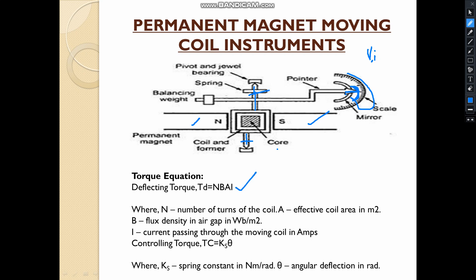The most important equation is the torque equation. Torque is force times distance, where force is NbIl and distance is d. Since l times d equals area A, the deflecting torque Td equals N·B·I·A, where A is the effective coil area in square meters, N is the number of turns, B is the flux density in the air gap, and I is the current through the moving coil in amperes.